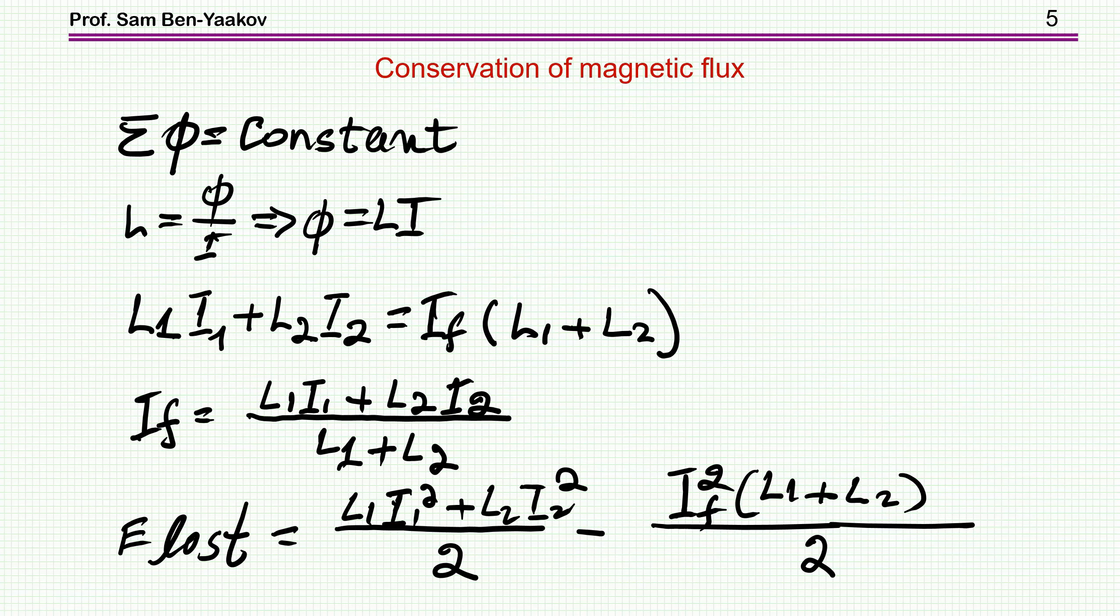What about the current that the inductors will carry after connection? Here I can invoke the conservation of magnetic flux law. This is not a very well-known law, but it's very powerful. Now I can find the flux from this definition of inductance. Inductance is flux over current, so therefore the flux is L times I. The initial flux here is L1 I1 plus L2 I2, and this is equal to the final flux, which is IF. This is the final value. This is the current of the two inductors after connection, times L1, and then IF times L2, from which I can find the final value of the current.